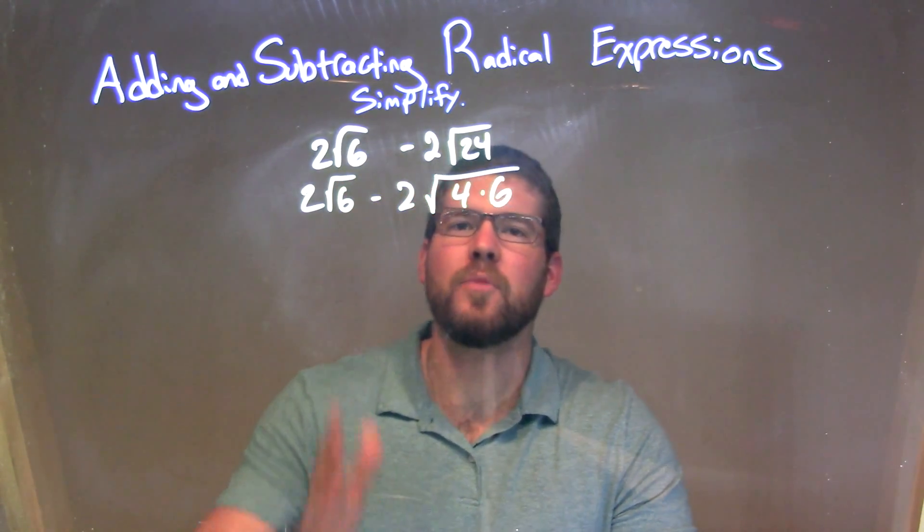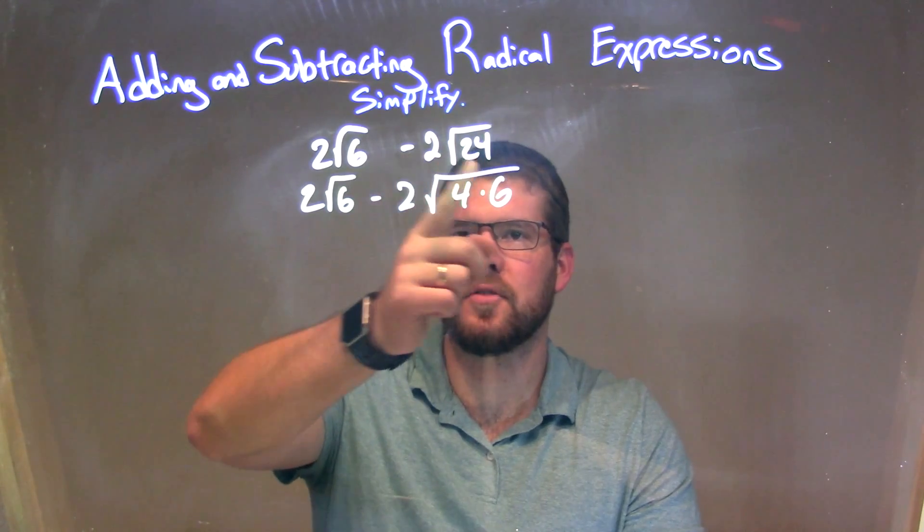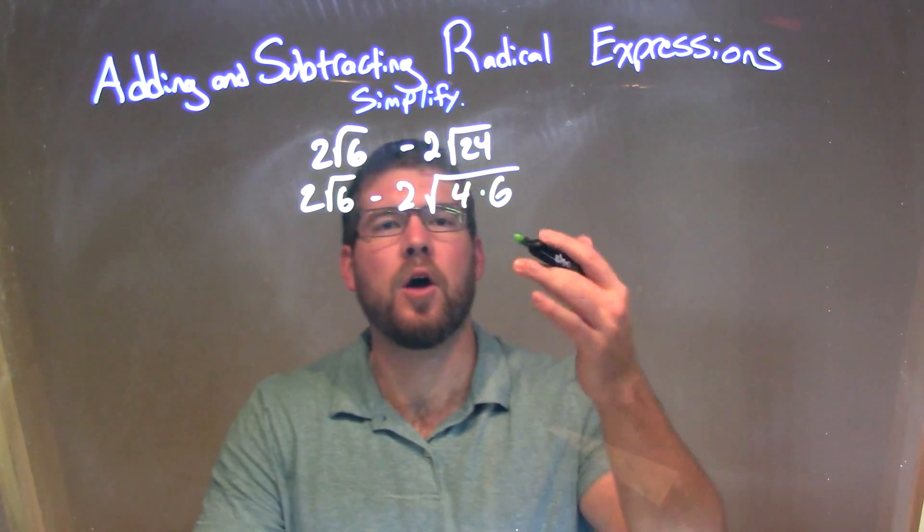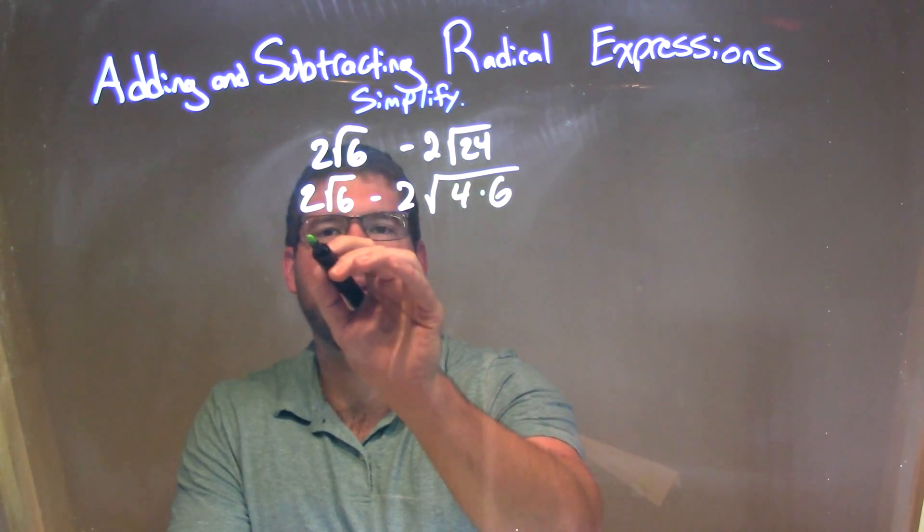So the reason why I chose 4 times 6 is that I want to see if I can get the same square root here, the same square root of 6, because if they're the same, now you can combine them. Our rules of square roots and multiplication say I'm allowed to do this.